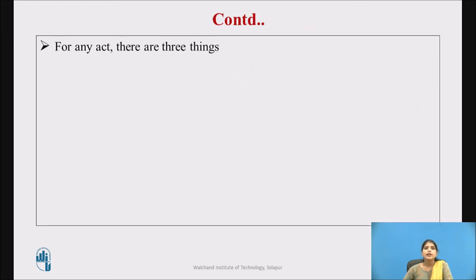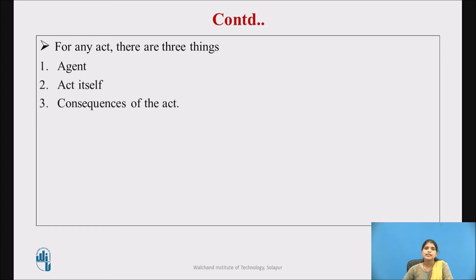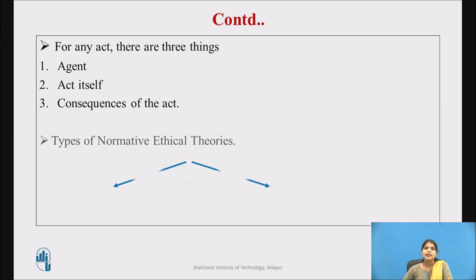For any act, there are three things that might be morally interesting: first, the agent — the person performing the act; second, the act itself; and third, the consequences of the act — meaning the result or importance of the act. Now we will see the types of normative ethical theories.